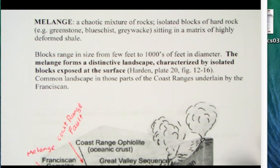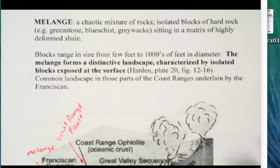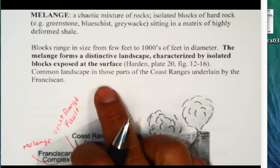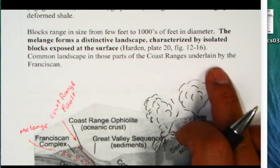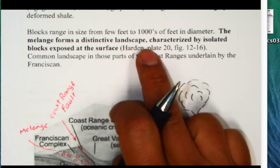You can see a figure 12-16 in your book. Common landscape in those parts of the Coast Ranges is underlain by the Franciscan. Just think of San Francisco - why San Francisco has Twin Peaks, Telegraph Hill, Nob Hill. All those are different rock types, these exotic blocks in this landscape in the matrix of shale.